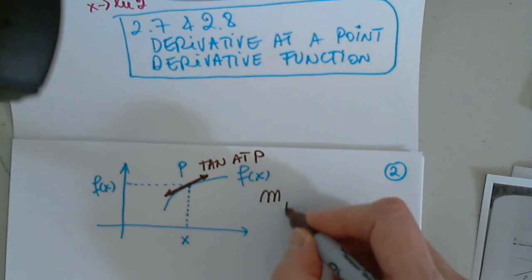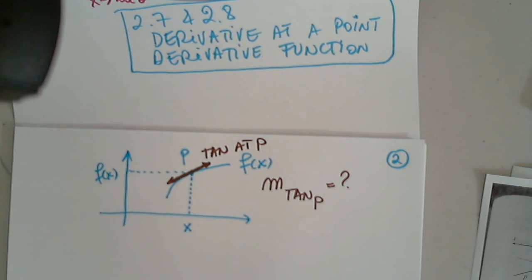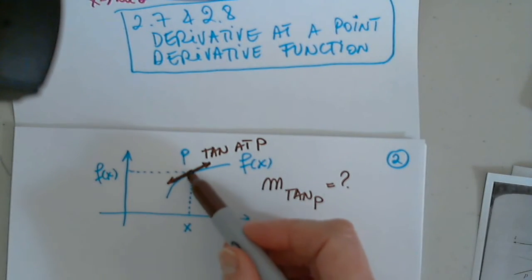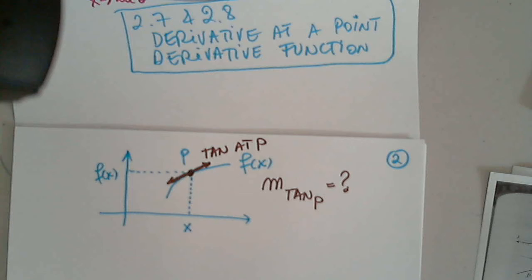And I would like to determine the slope of this line. So obviously, this is the tangent at P. This line is the tangent at P, and I want to determine the slope of the tangent at P. That's my question. And we know that I only have one point. So in order to determine the slope of a line, I need two points, but I only have one.